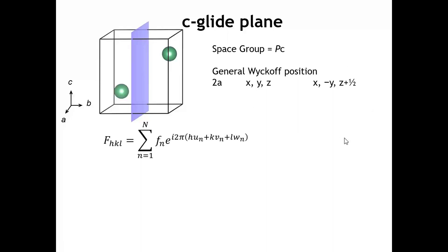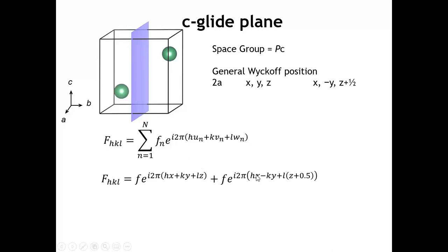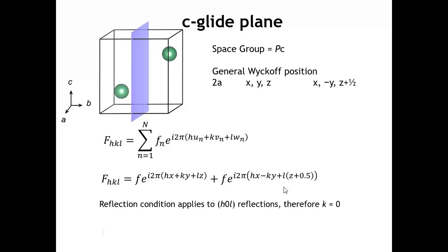We can write out our structure factor terms. Once again, two atoms in the unit cell means two terms in our structure factor. I've substituted in the coordinates of atoms 1 and 2. This particular reflection condition is applicable to the h0l reflections — it only applies when k is 0. Because k is 0, we can simplify the expressions; the middle term drops out.